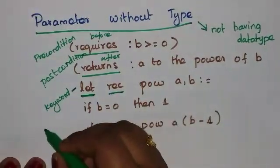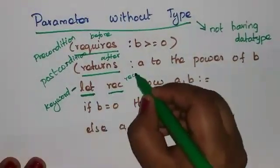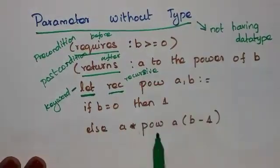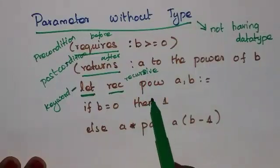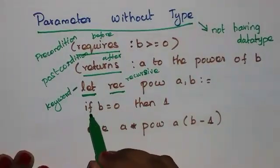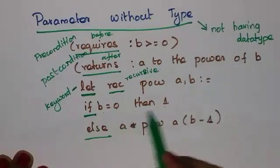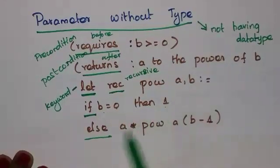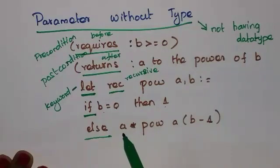'Rec' means recursive — a recursive function is present in this code. Here, an if condition is given: if b is equal to 0, then return the value 1. Otherwise, it will execute this expression.